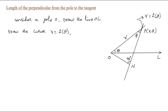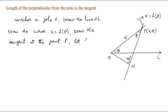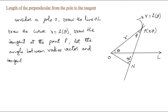For the given curve, we have drawn a tangent at point P. The angle between the radius vector and the tangent we take as φ. The angle POL is θ, and we also take the angle between the radius vector and the tangent.